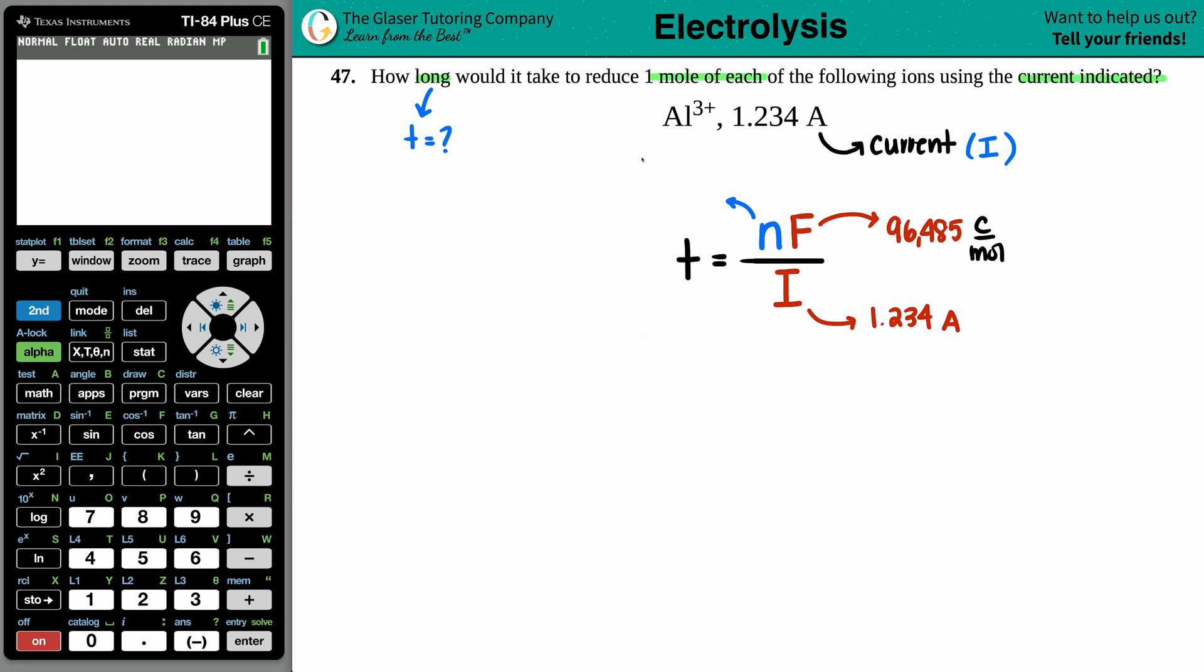So in this formula, the n value is actually the number of moles of electrons. It's not how many of the actual ion you have. It's all about the electron, which I'll put e⁻ here.